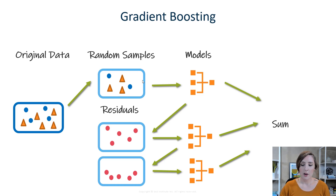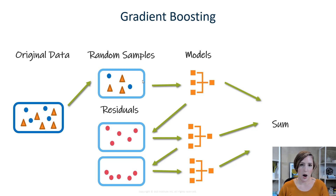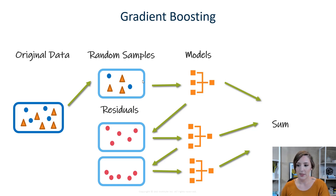Once all your training is done and you've either reached the cutoff or stopped due to overfitting, you take a sum of these models' predictions. This is different from the previous methods that use a voting approach. Here, the first model gives the initial prediction and the rest predict the errors, so you take that initial prediction and modify it based on what was learned from those errors — adding them together to fix any offset.